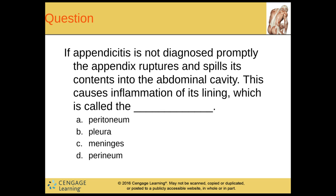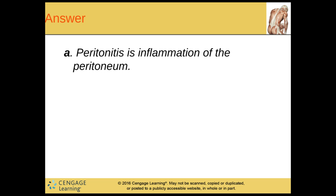So, question: if appendicitis is not diagnosed promptly, the appendix ruptures and spills its contents into the abdominal cavity. This causes inflammation of its lining — the peritoneum. So that's peritonitis — inflammation of the peritoneum.